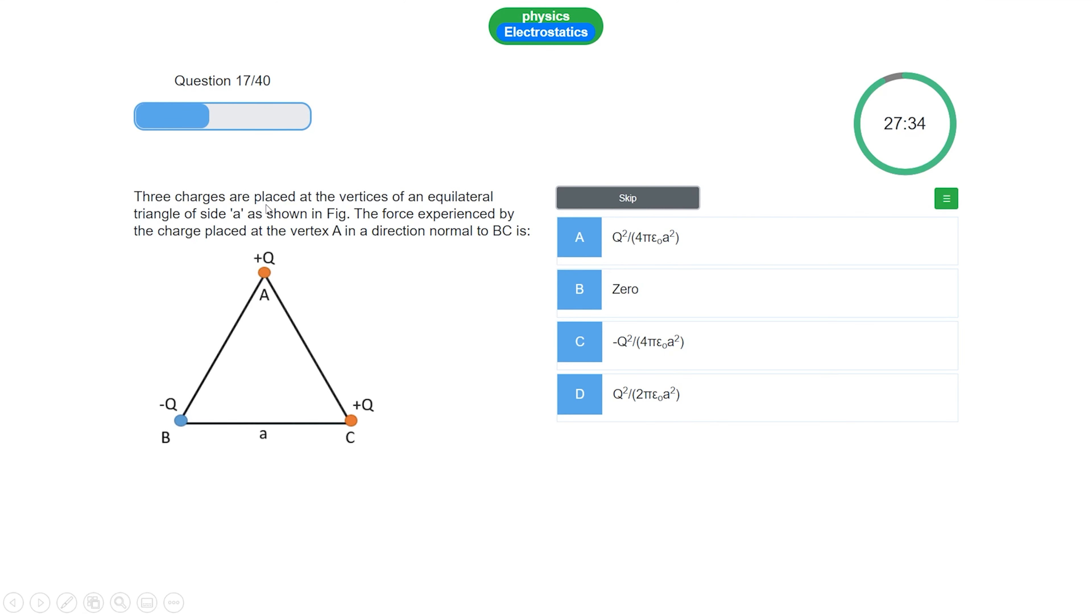Three point charges are placed at the vertices of an equilateral triangle of side A as shown in the figure. The force experienced by the charge placed at vertex A in the direction normal to BC is: